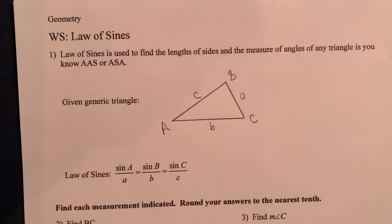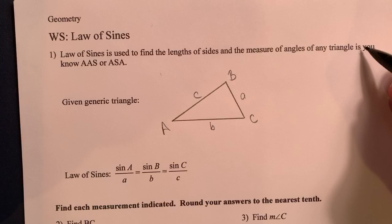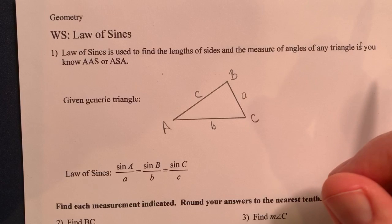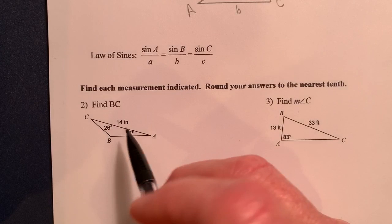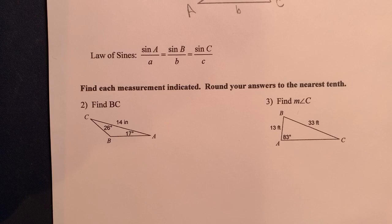So now we're going to look at Law of Sines. What is Law of Sines? You would use Law of Sines to find lengths of sides and the measures of angles of a triangle if you know angle angle side or angle side angle. So for example, here's a sample of where you have angle side angle and you would be able to find maybe the measure of BC for example.